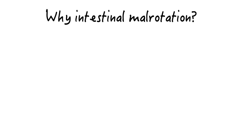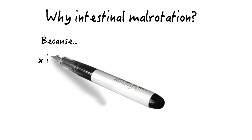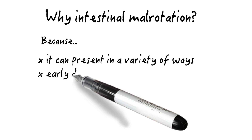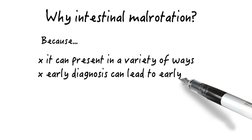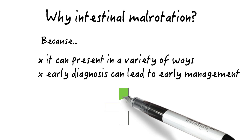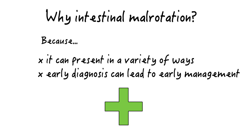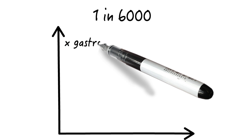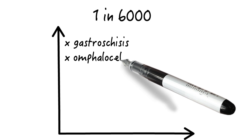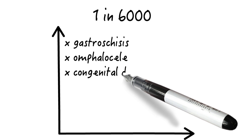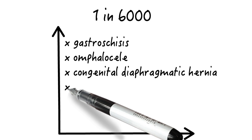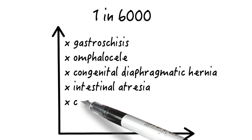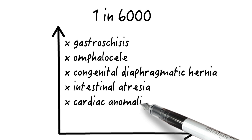We are talking about intestinal malrotation because it is an important condition that can present in a variety of ways. An early diagnosis of the condition can prompt early management, which can have a big impact on the prognosis. The incidence of malrotation has been estimated at 1 in 6,000 live births. Associated anomalies include gastroschisis, omphalocele, congenital diaphragmatic hernia, intestinal atresia, cardiac anomalies especially heterotaxy syndrome with polysplenia, and trisomy 21.